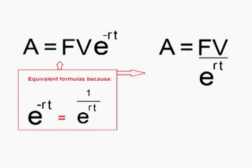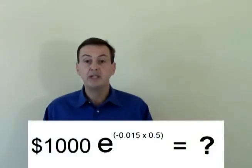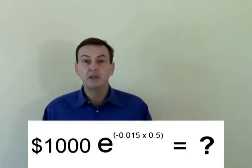These formulas are the same. You will usually see it written as multiplied by a negative rate of return instead of divided by a positive rate of return, because it makes more sense writing it that way. However, both equations are equivalent. So if we want $1,000 six months from now, let's find out how much we would need to invest into a bond today that pays 1.5% continuously compounded for six months.